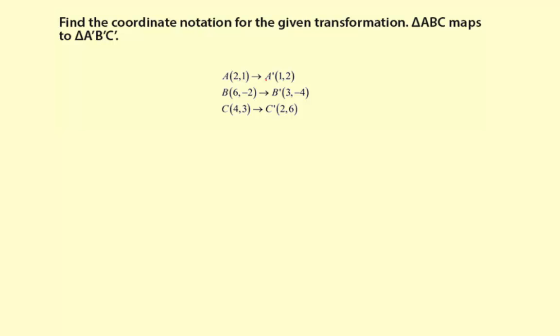Let's look at A to A prime. I see 2, 1 to 1, 2. So my first thought is maybe the X and Y values are just switched. Now I need to verify this with the other two pairs of coordinates. Down here, 6, negative 2 for B, and 3, negative 4 for B prime. The X and Y values aren't switched here, so there must be a different type of pattern. Same here for C and C prime. There's a little more to it.